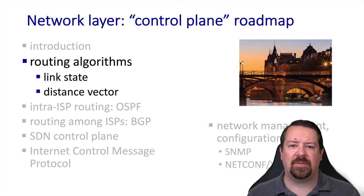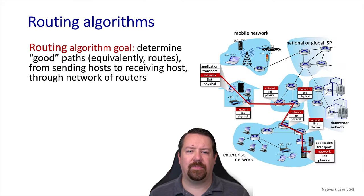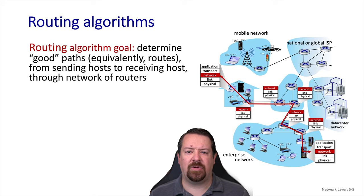Now we'll look at the most common routing algorithms in use in the internet: link state and distance vector. A routing algorithm is a formalized process of finding a path through a network. We want to make an important distinction here — routing algorithms are not synonymous with routing protocols. The routing algorithm is the formalism or principle behind finding these paths through a network. A routing protocol takes an algorithm and wraps it in all the implementation details needed to make it function, such as control messaging and packet header specifications. In this chapter, we will first look at the routing algorithms and understand how they discover paths, and then we'll look at the protocols that implement those routing algorithms.